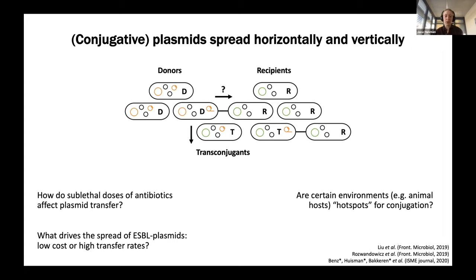To get a good idea of plasmid biology and to have tools to predict the epidemiology — the spread of plasmids in different environments — we need to distinguish the spread due to the horizontal component from aspects that are more vertical, i.e., transmission of the plasmid together with its host. That's why we need really good estimates of plasmid conjugation rates. For instance, how sublethal doses of antibiotics might affect plasmid transfer is a question that's been studied, since antibiotics can inhibit growth of the strains involved in transfer.